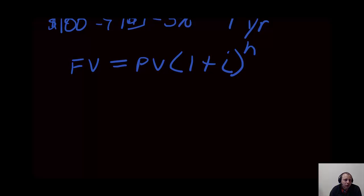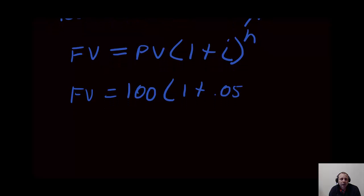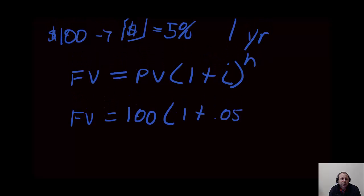So here, our future value, which we don't know what it is—we want to know how much money we have at the end of the year—is going to be $100 times 1 plus 0.05. That 0.05 is this 5% here, and we're going to raise it to the 1 power, which is basically not raising it at all.